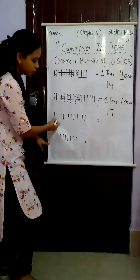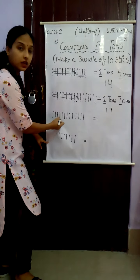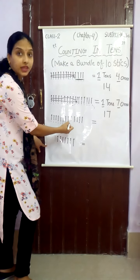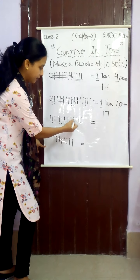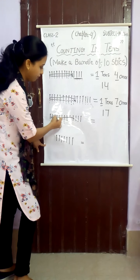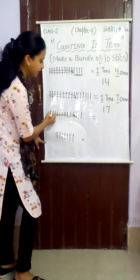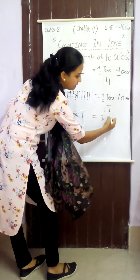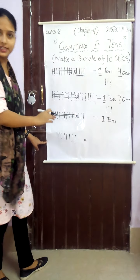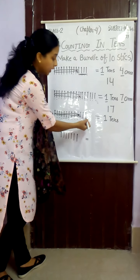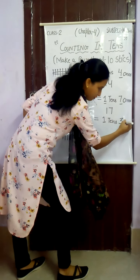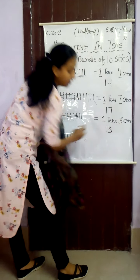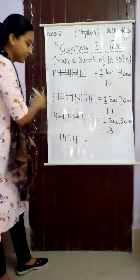Next: 1, 2, 3, 4, 5, 6, 7, 8, 9, 10 — the bundle of ten sticks is ready, so we write one ten. The remaining loose sticks are: 1, 2, 3 — three ones. So the total sticks are one three, thirteen.